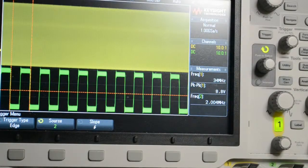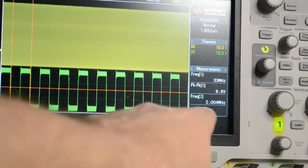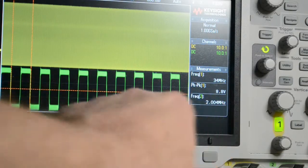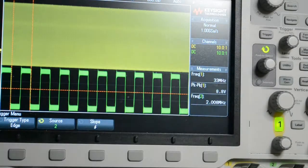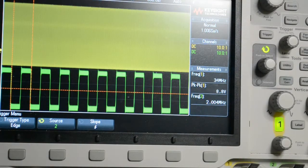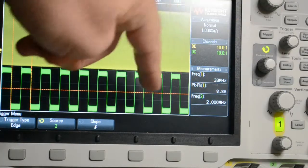And you can see there, this 8 bit microcontroller has no issue giving you a 2 meg PWM, perfect square waves. So that's running at 2 megs.